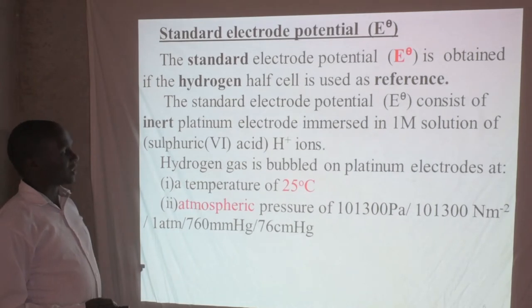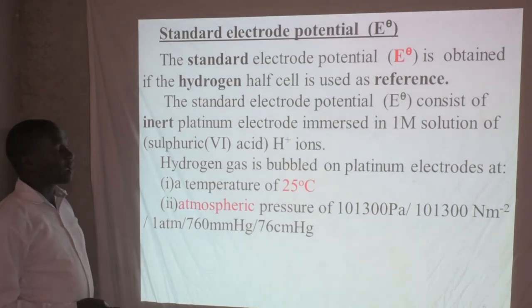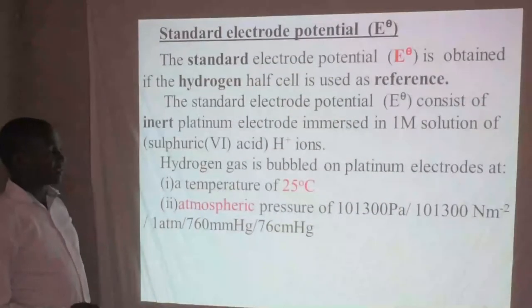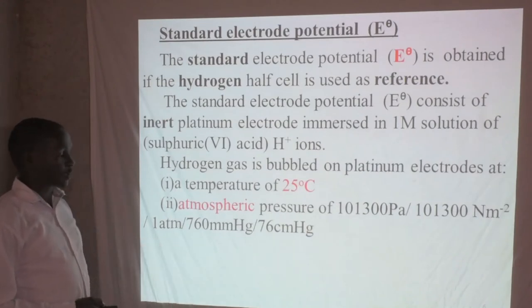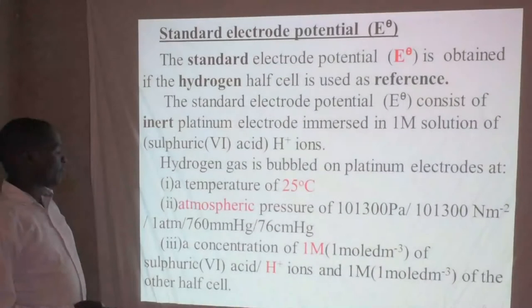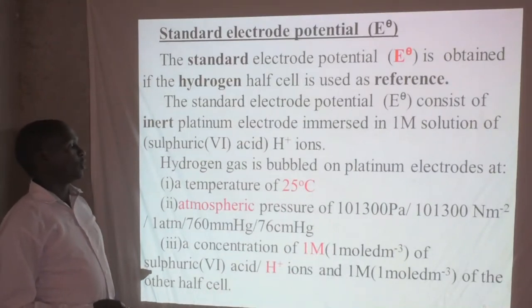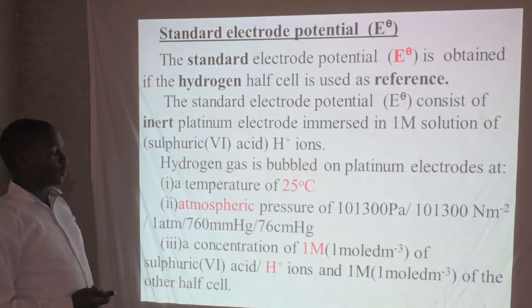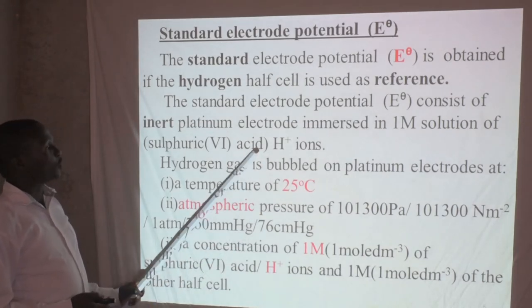We have an atmospheric pressure of 101,300 Pascals, or Newtons per square meter, or 760 millimeters of mercury, or 76 centimeters of mercury. That is the standard pressure — one atmosphere. We also have a concentration of one molar of sulfuric acid. So we prepare a one molar sulfuric acid solution. These are the standard conditions required for the reference electrode. And don't forget that we are bubbling in the hydrogen gas.